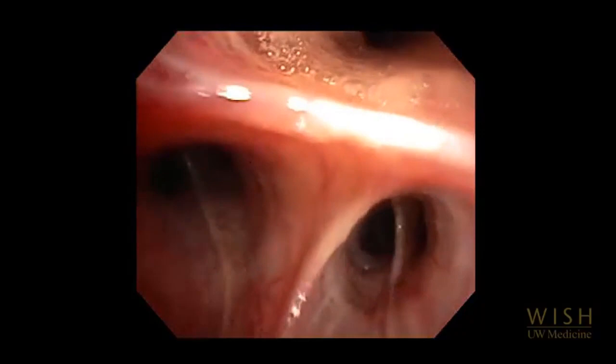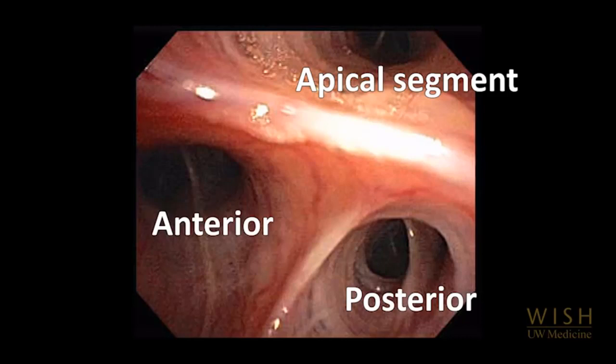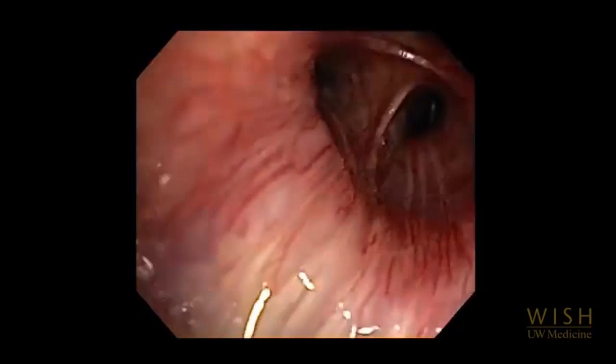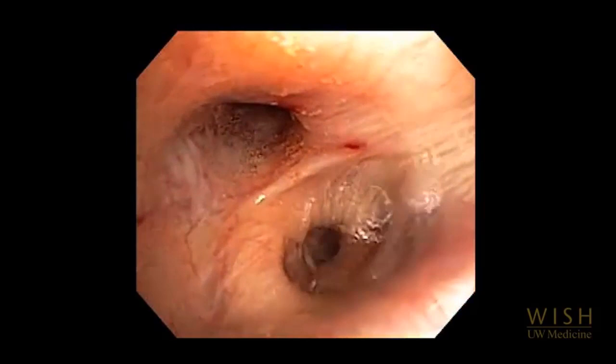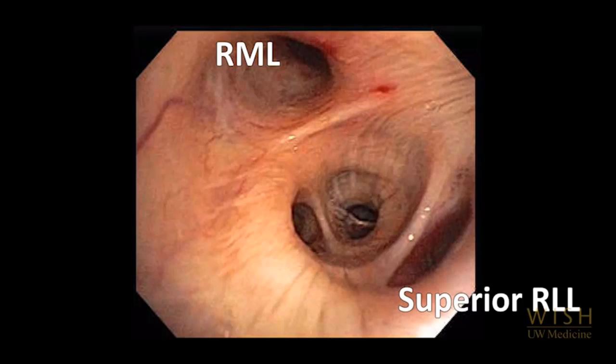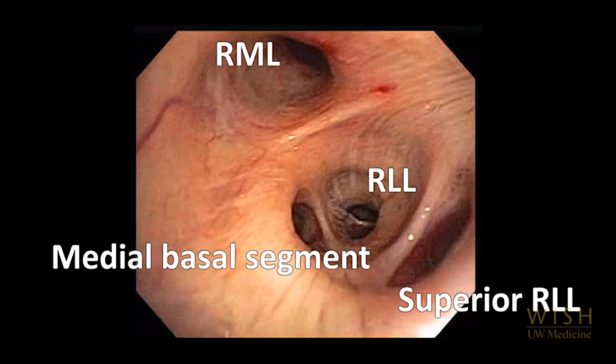Now we have a better view of the apical segment. The bronchoscope returns to the right main stem and then continues into the bronchus intermedius, which runs from right upper lobe takeoff to right middle lobe takeoff. The right middle lobe takes off anteromedially. The superior segment of the right lower lobe takes off posteriorly, at the left of the right middle lobe bronchus. The medial basal segment takes off medially. The right lower lobe bronchus continues distally.